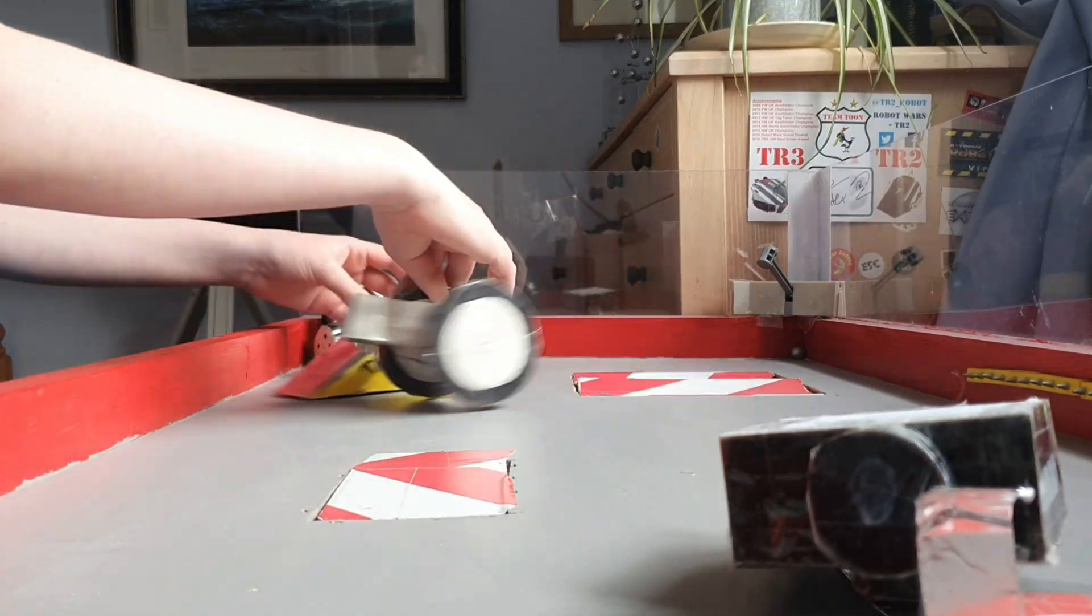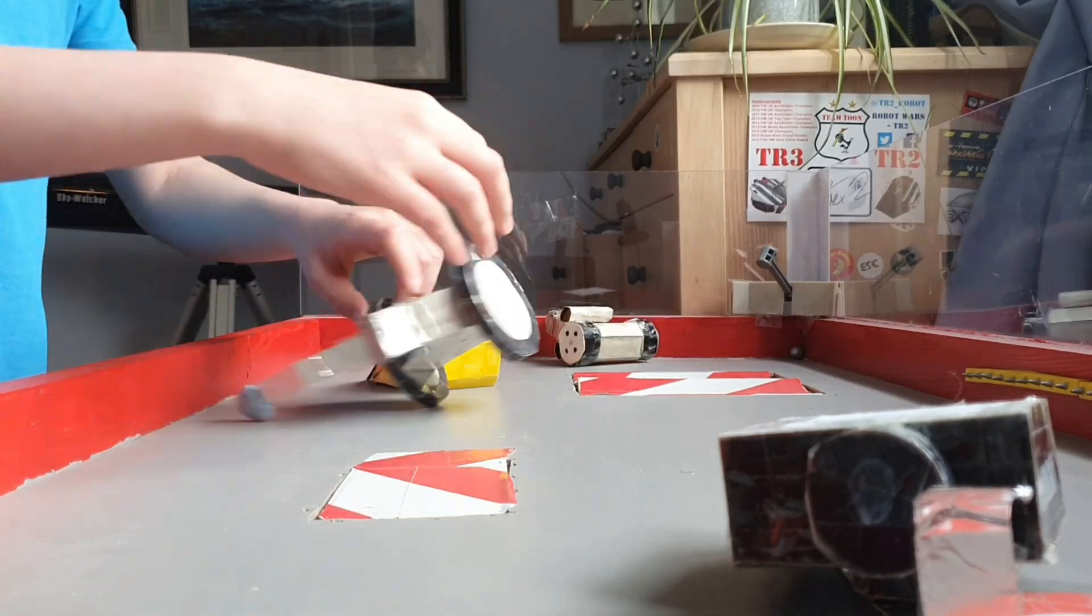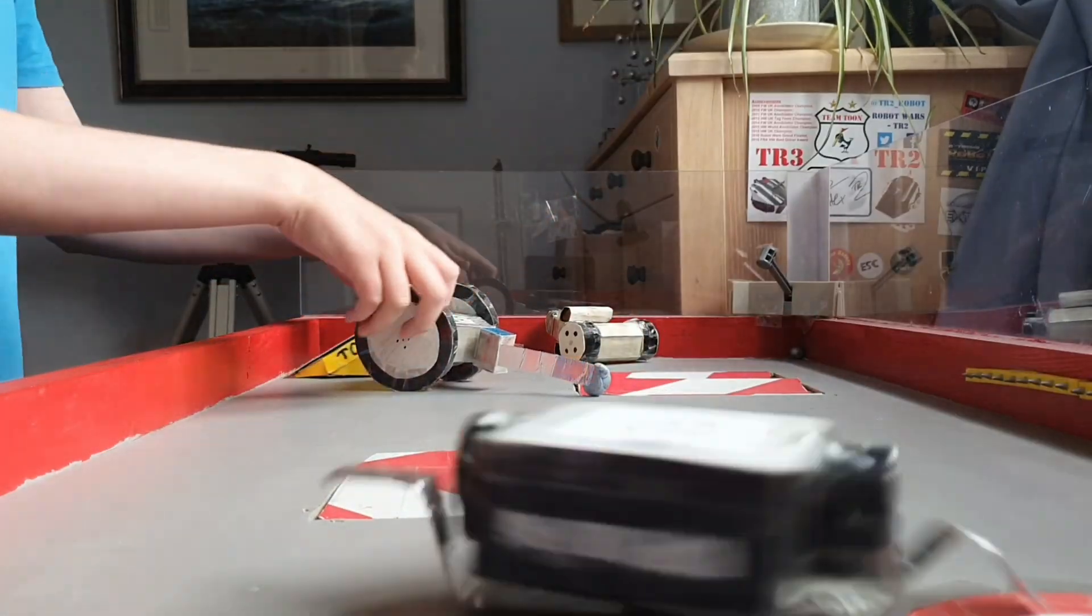Trying to get more hits in on Toxic 2, that's big damage there. Gaston in the corner as well. Can Gaston self-right? Yes, they can. Gaston back on the attack with that drum spinner, doesn't seem to be doing much. Toxic 2 flips them away.